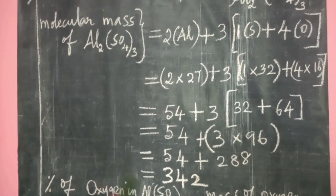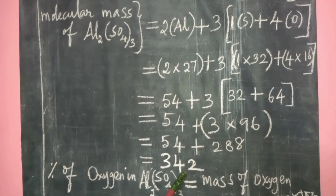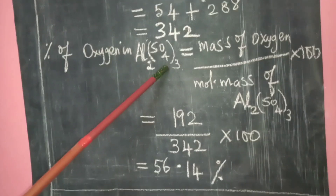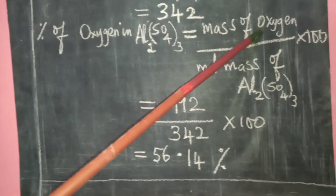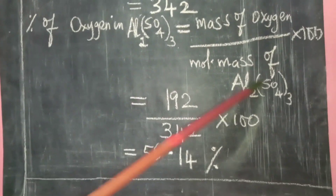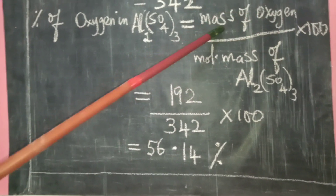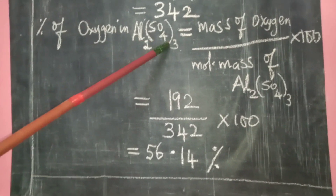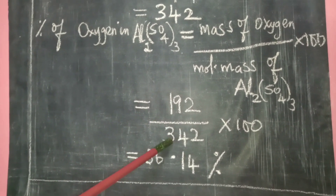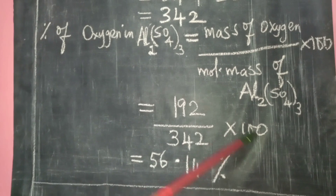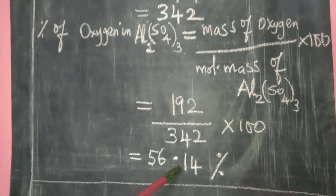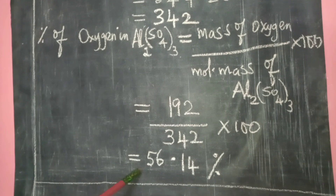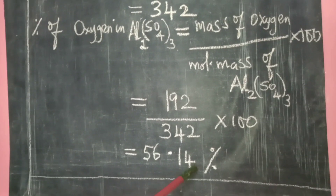Molecular mass of aluminium sulfate is 342. Percentage of oxygen = (mass of oxygen ÷ molecular mass of aluminium sulfate) × 100 = (16×12 ÷ 342) × 100 = (192 ÷ 342) × 100 = 56.14%.